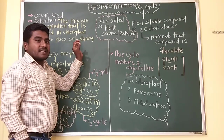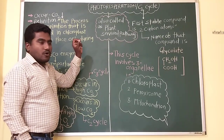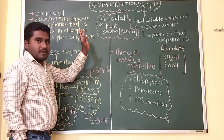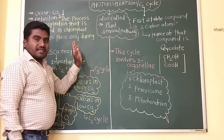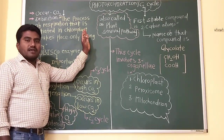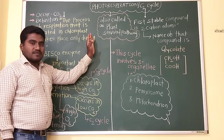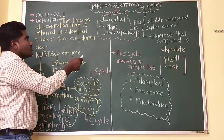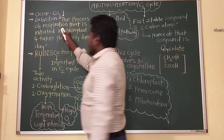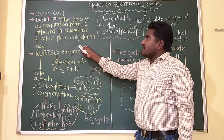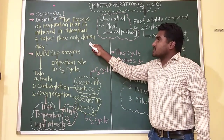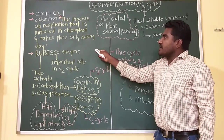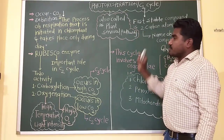This is the plant survival pathway. When carbon dioxide concentration becomes low, then the photorespiration will operate.